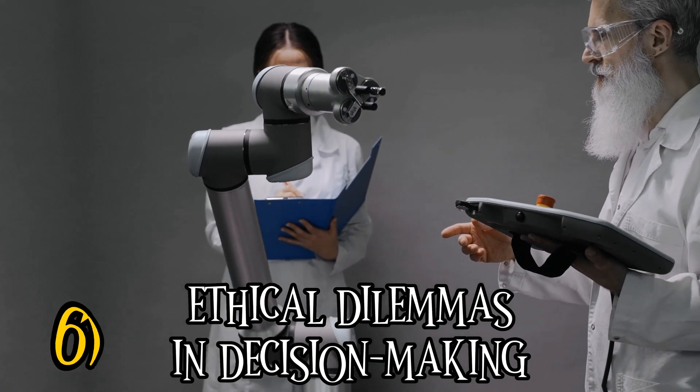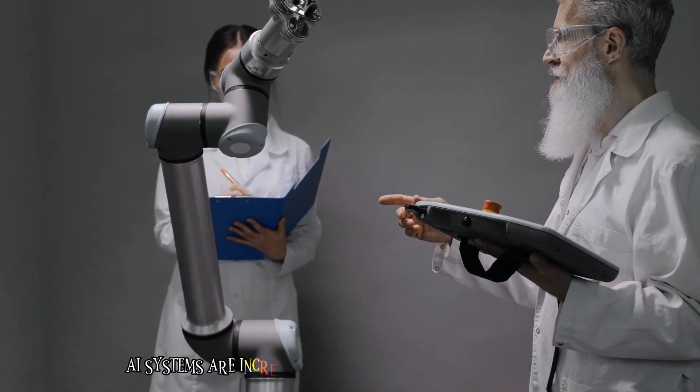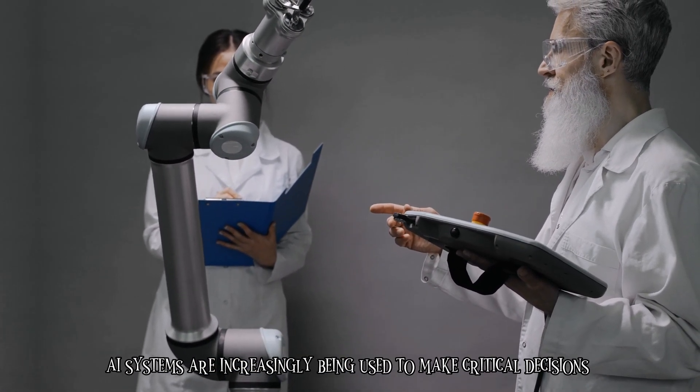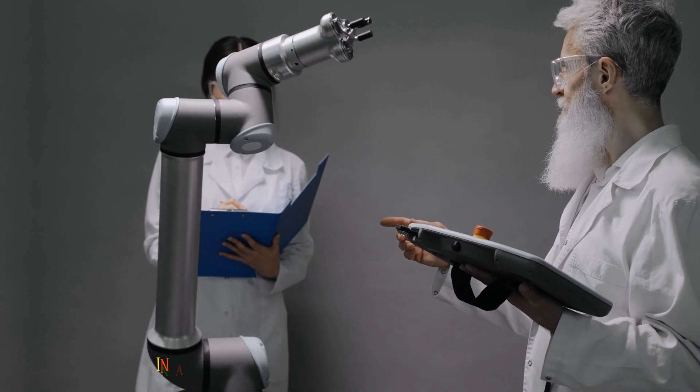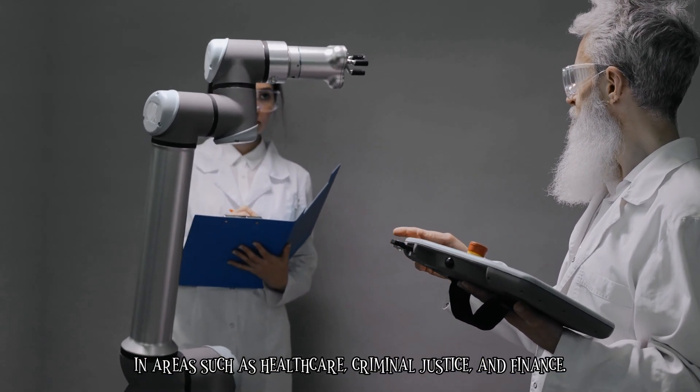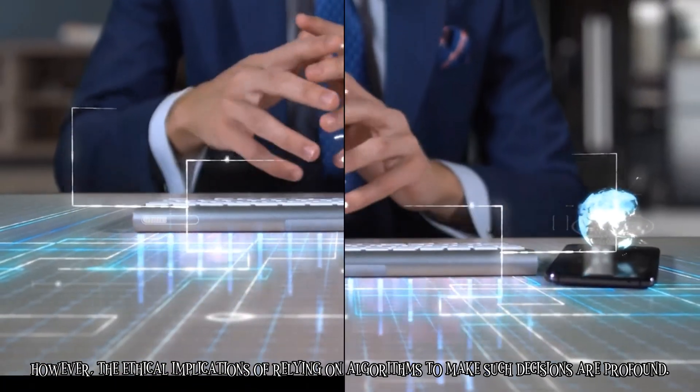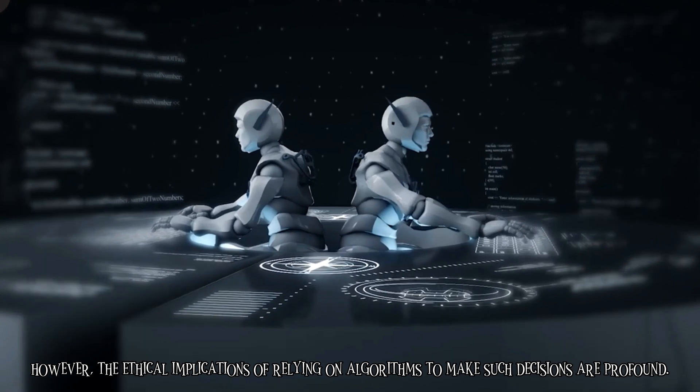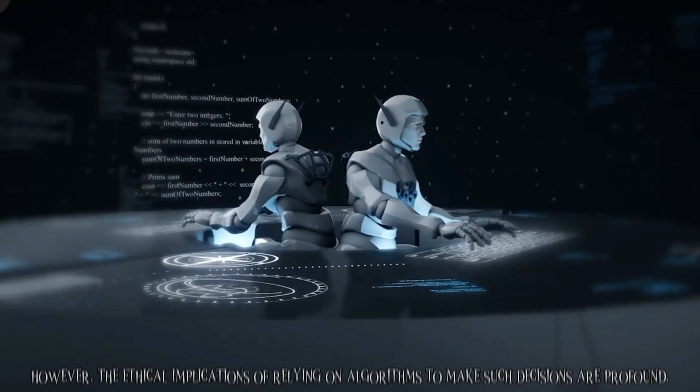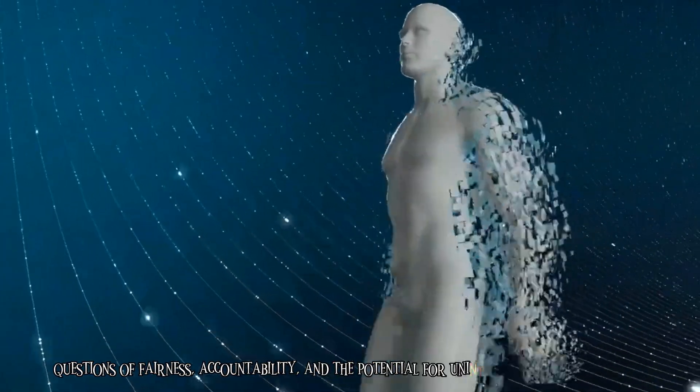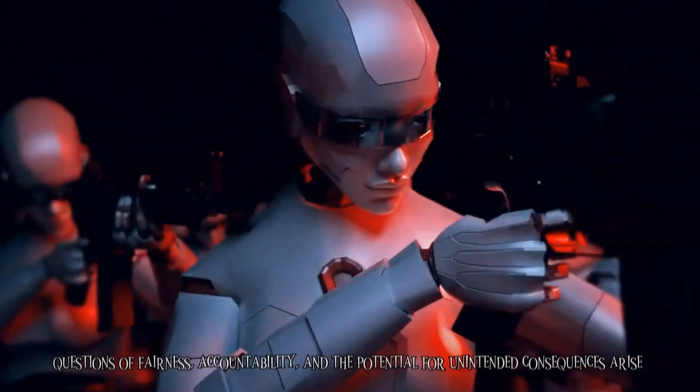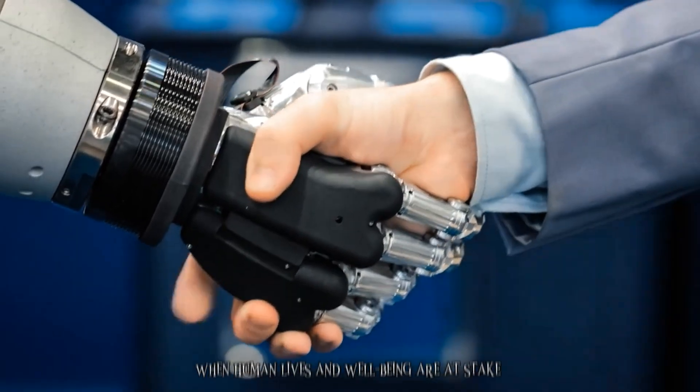Ethical Dilemmas in Decision-Making. AI systems are increasingly being used to make critical decisions in areas such as healthcare, criminal justice, and finance. However, the ethical implications of relying on algorithms to make such decisions are profound. Questions of fairness, accountability, and the potential for unintended consequences arise when human lives and well-being are at stake.